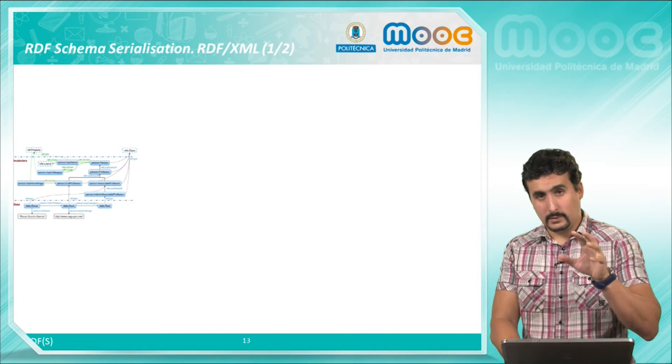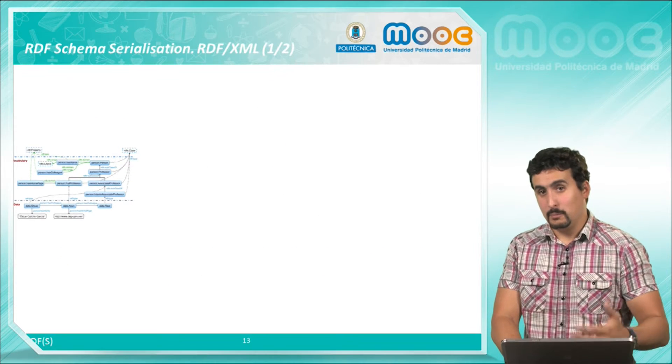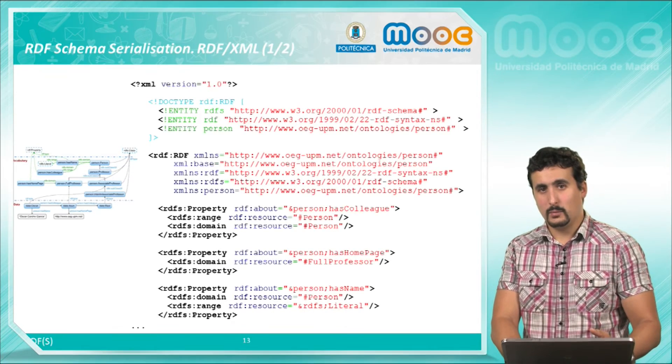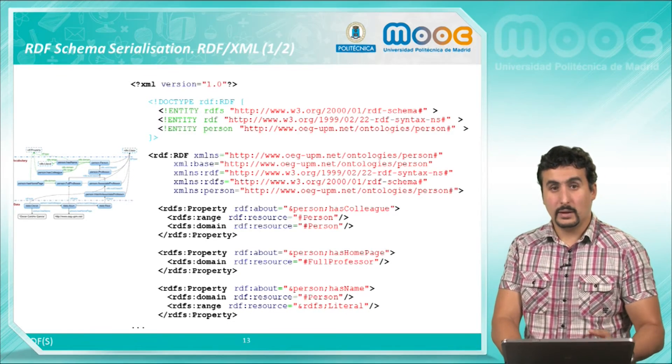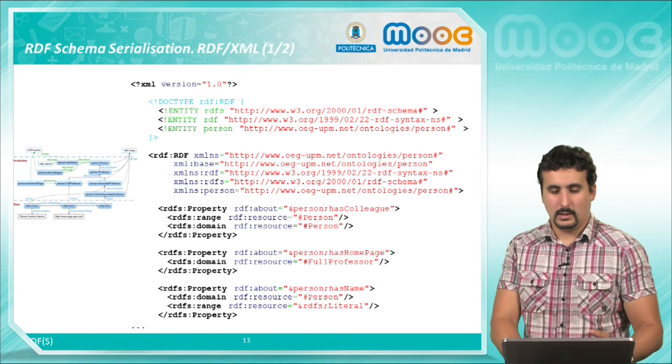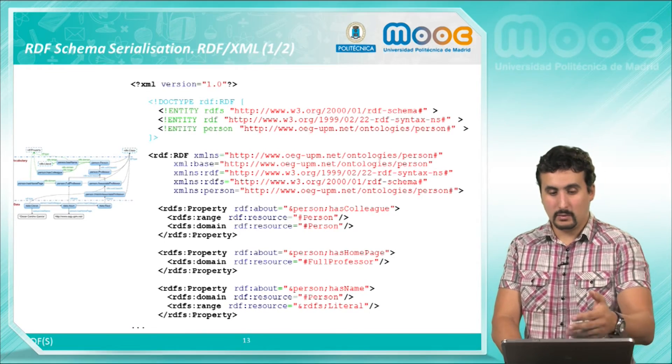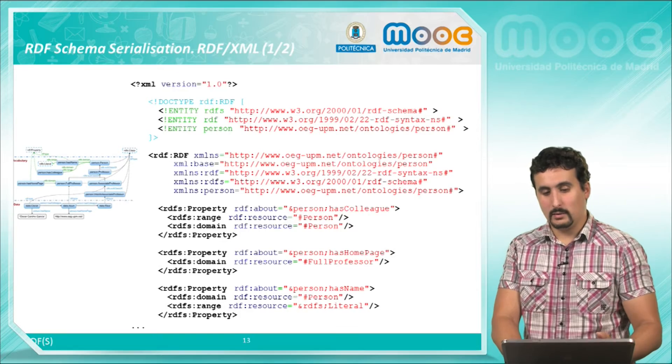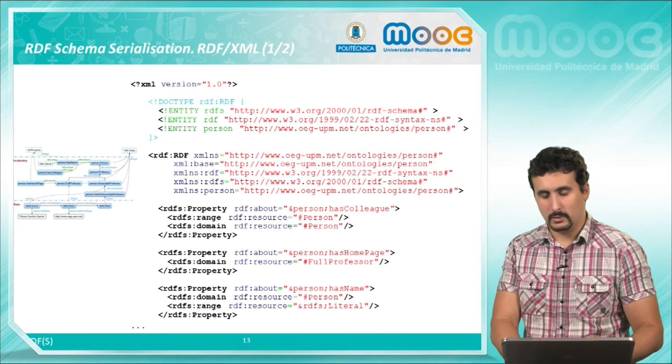We can codify this model using for example the XML syntax. As we see here we have the code for the properties and the related domain and range values. For example we have HasCollege with the range and domain person in this case.